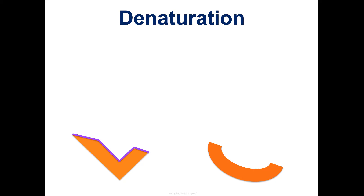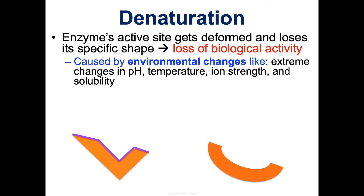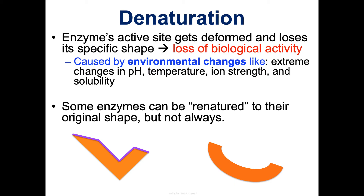What happens if that enzyme's active site gets deformed? That's called denaturation. If the enzyme's active site loses its very specific shape, we have a loss of biological activity — the enzyme cannot do what it was designed to do. This can be caused by environmental changes like extreme changes in pH or temperature. Many enzymes work in a very specific temperature or pH range, and if it gets outside of that range, that can cause denaturation. Some enzymes can be renatured and return to their original shape, but not always.